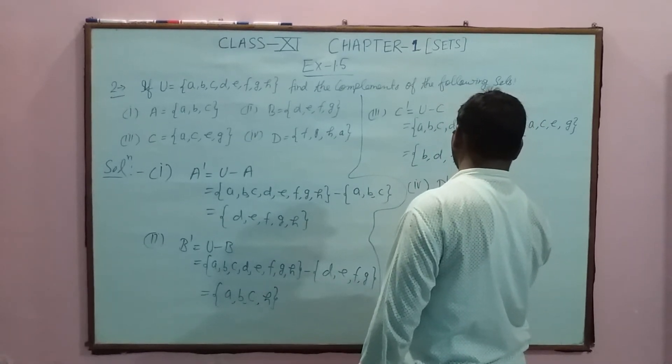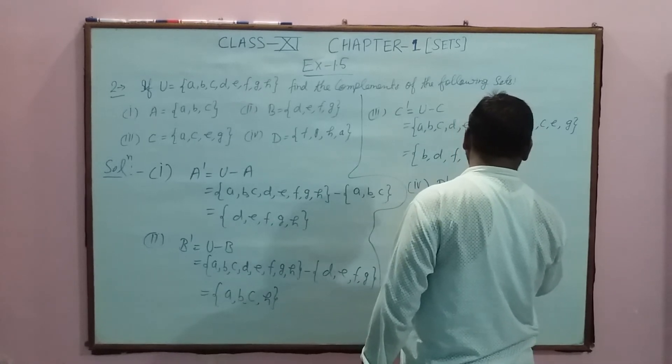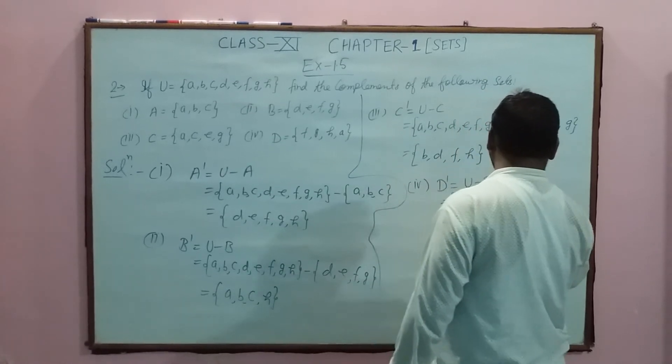The remaining elements are: b, d, f, h. Clear?